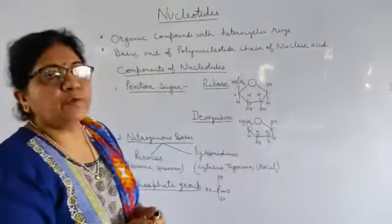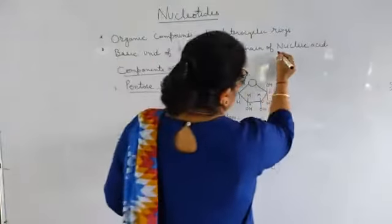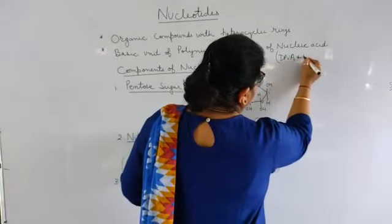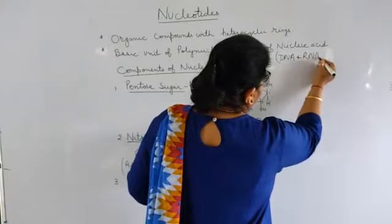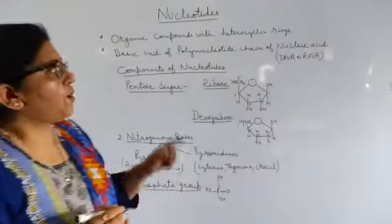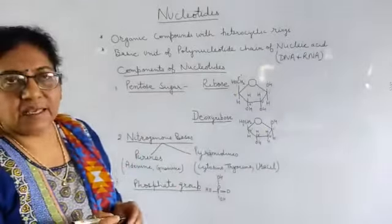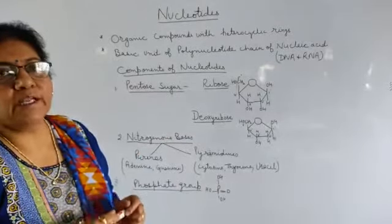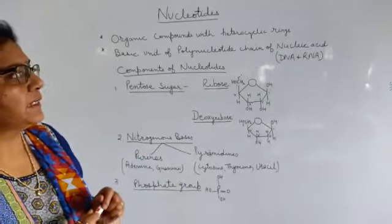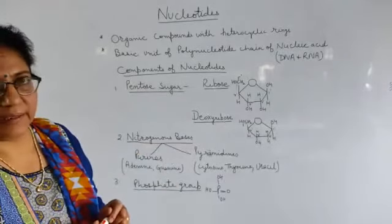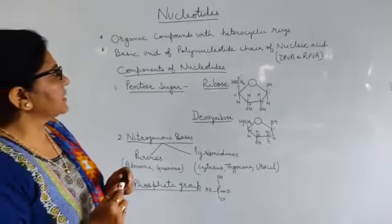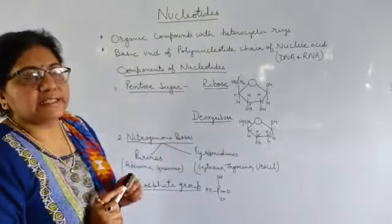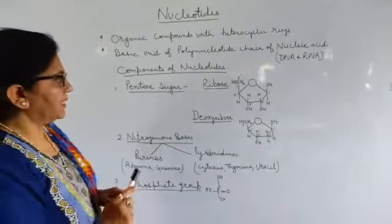As we know, we have two types of nucleic acids, that is DNA and RNA. So nucleotides are the monomers of DNA and RNA, or they are also known as the basic units of polynucleotide chains of DNA and RNA. Now first we will discuss the components of nucleotides. Nucleotides consist of three components.